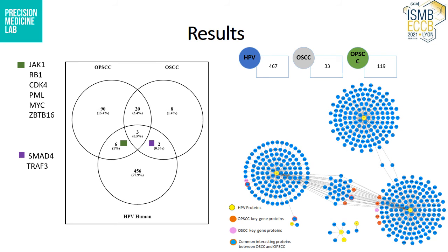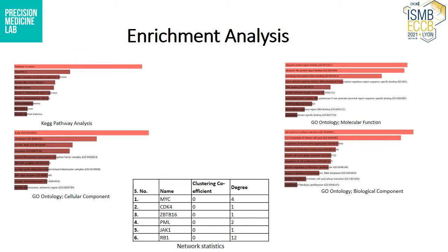Then, I built a protein-protein interaction network of HPV human interaction data, which also showed the common OPSCC and OSCC proteins in it, shown here with different colors. The enrichment analysis for the six proteins found common between OPSCC and HPV human dataset was carried out using NRHR. Here I have shown the KEGG pathway analysis, the GO ontology for the molecular function, cellular component, and biological component. Also, at the bottom of the slide, network statistics for these six proteins are shown.